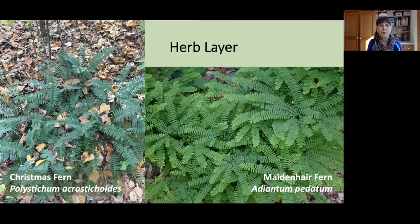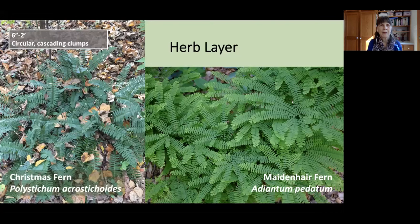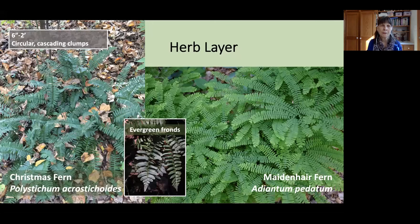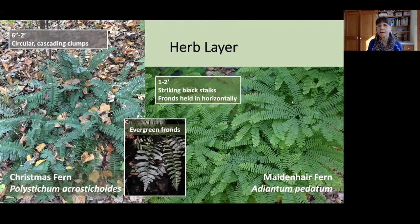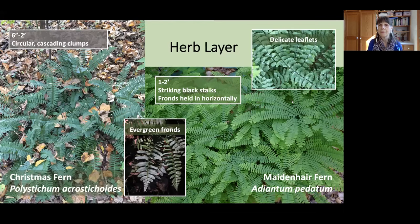There are two ferns native to the herb layer. The first is Christmas Fern, Polystichum acrostichoides, reaching anywhere from 6 inches to 2 feet with a circular cascading clump habit. When massed, it is quite effective at providing erosion control. This plant has evergreen fronds — leading to the name Christmas Fern — and the pinnae, the little leaflets, are said to resemble Christmas stockings. The second fern is Maidenhair Fern, Adiantum pedatum. It reaches 1 to 2 feet and has striking black stalks. The very unusual thing about this fern is that the fronds are held horizontally in a fan-like arrangement, with very delicate pinnae.